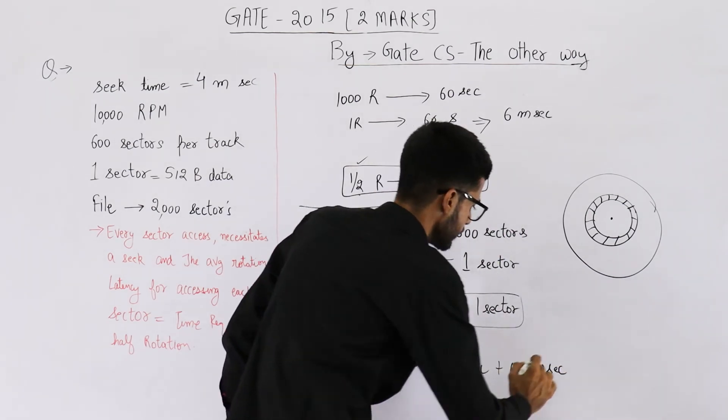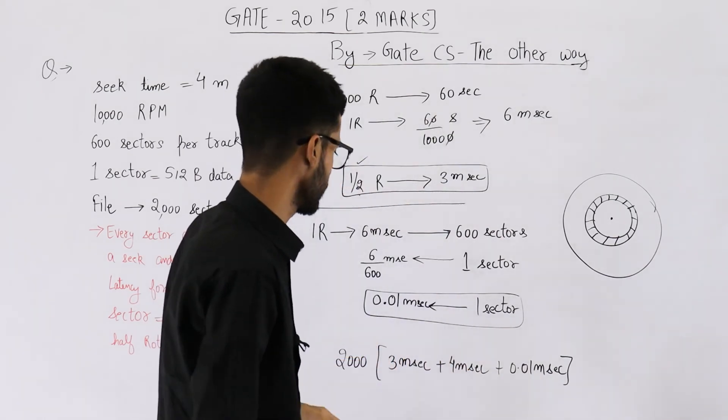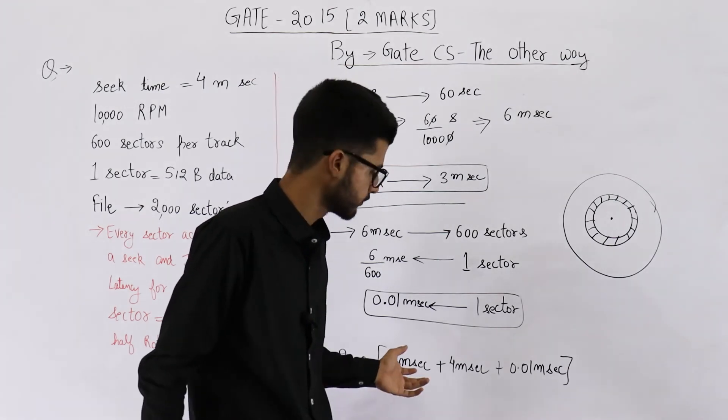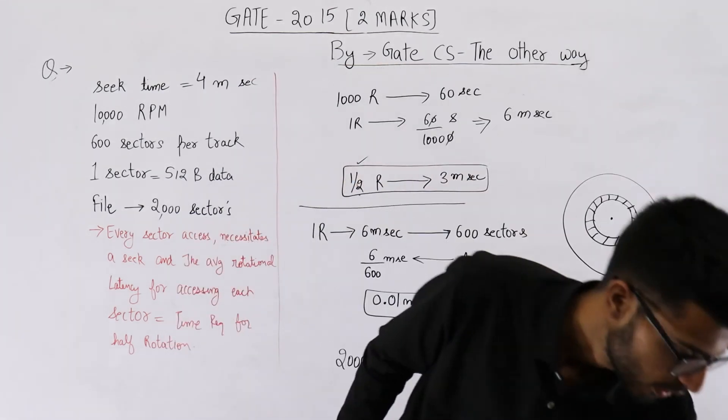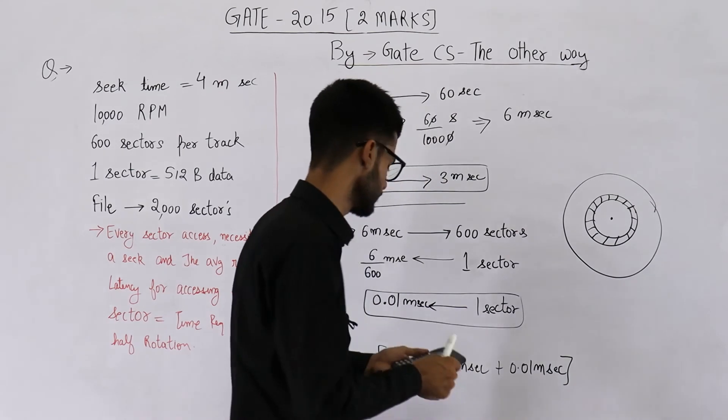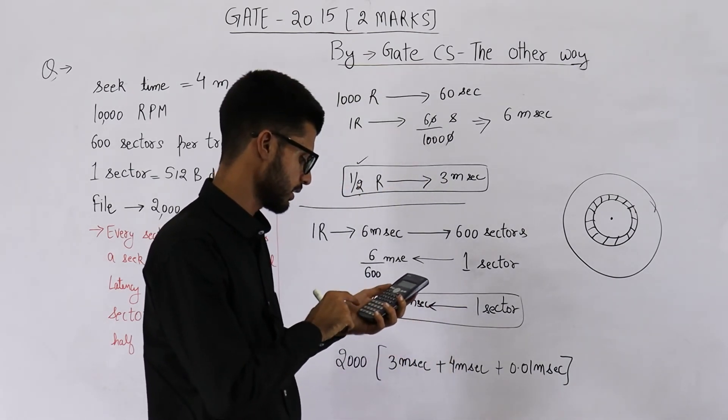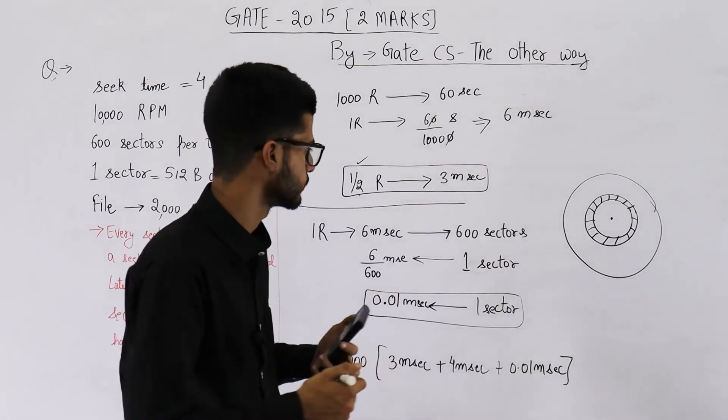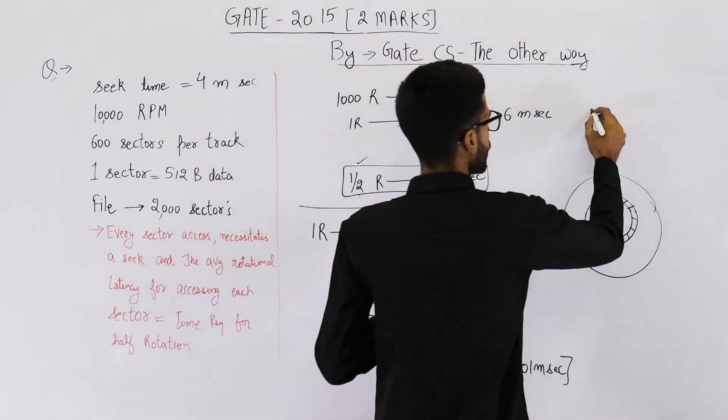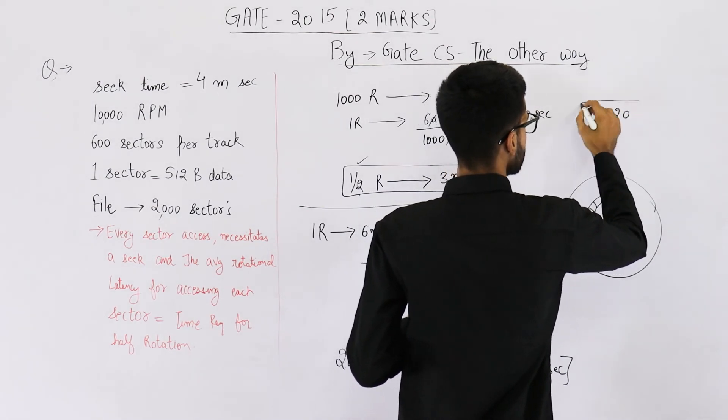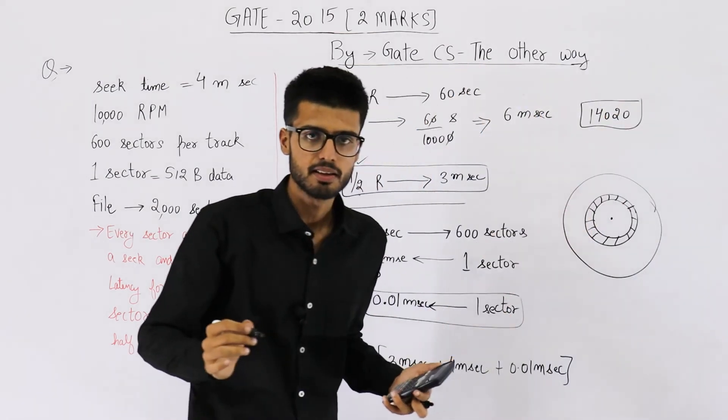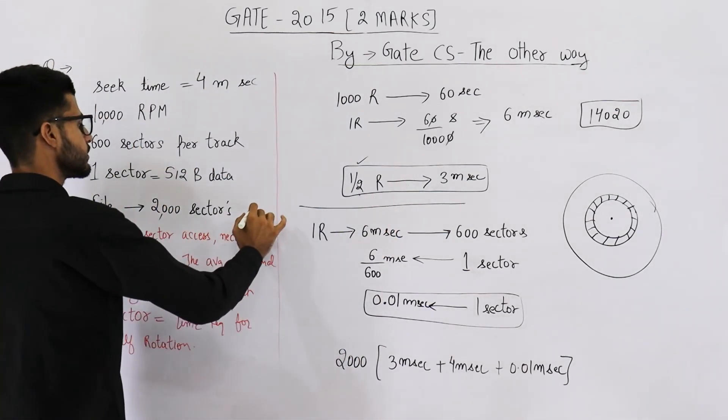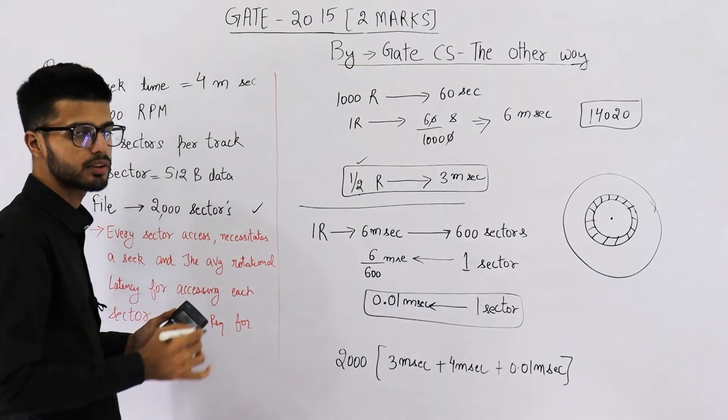That means your answer will be 2000 into 3 millisecond plus 4 millisecond plus 0.01 millisecond. Let's calculate. This is 7.01 into 2000. That will be 14,000 something. 7.01 multiplied by 2000 is 14,020. 14,020 milliseconds will be required to access this file. So this is your answer.